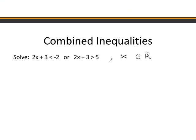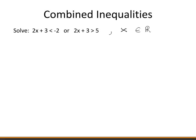Suppose you were asked to solve: 2x + 3 is less than −2 or 2x + 3 is greater than 5. The word OR is used to join these two inequality statements — this is called a disjunction. We must solve for values of x that make at least one of these statements true, so we'll solve these now.